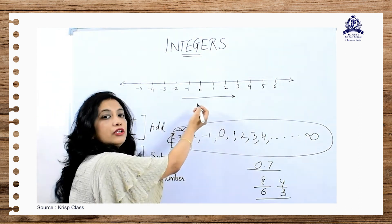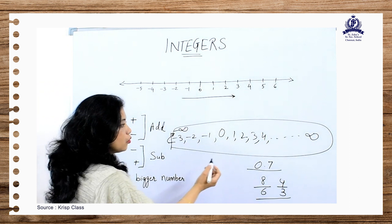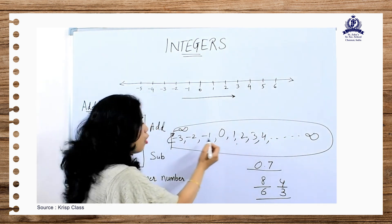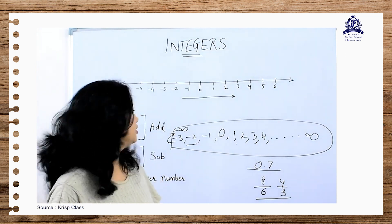They can be plotted on the number line but they are not integers. Integers are only the whole numbers along with their negatives. Whole numbers along with their negatives are called integers.